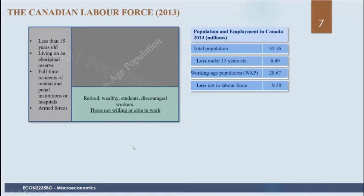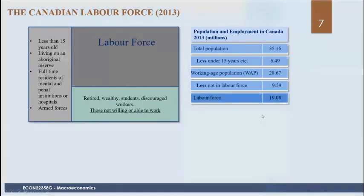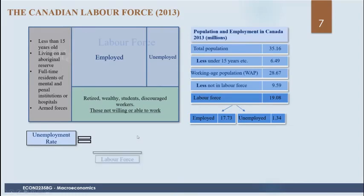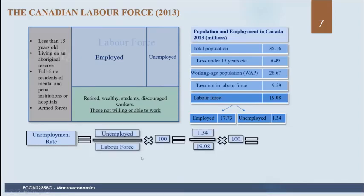When we remove those people, we get the labor force — 19.08 million in Canada in 2013. These people are what generate the country's GDP. We can break the labor force into those who are employed and those who are unemployed. The unemployment rate is simply the proportion of the labor force that are unemployed: number unemployed divided by the labor force times 100. In this example, it's 7.1% Canada-wide.